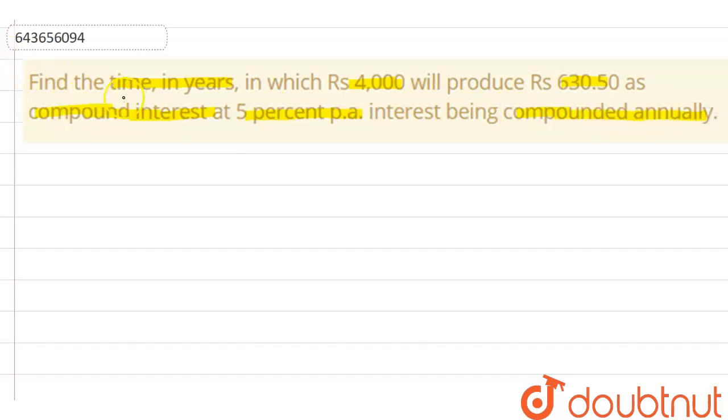As the question says to find the time in years for Rs 4000, we can say that the principal amount P equals Rs 4000. The question says it will produce Rs 630.50 as compound interest, so CI equals Rs 630.50.